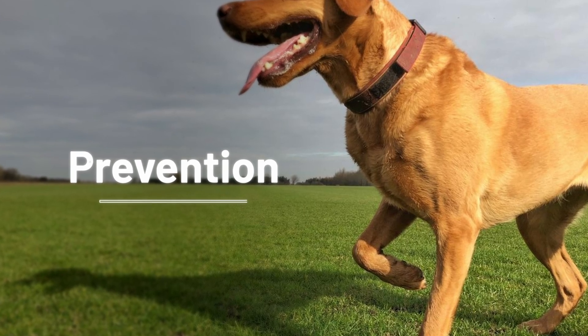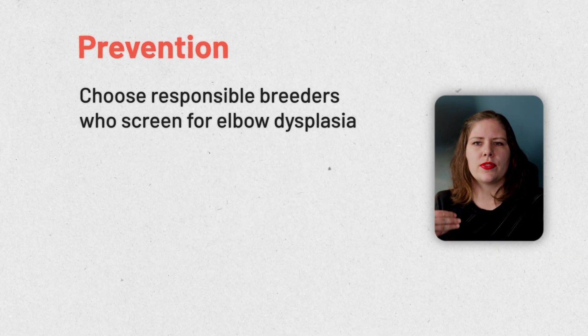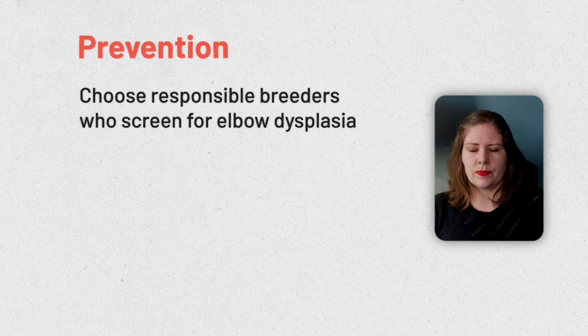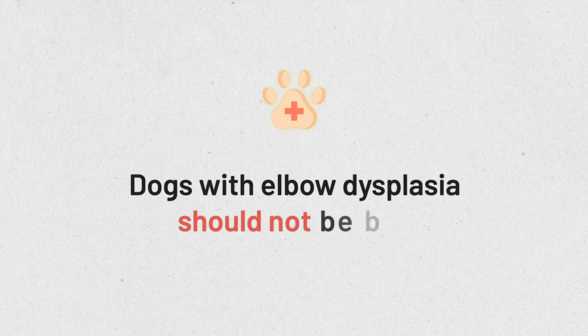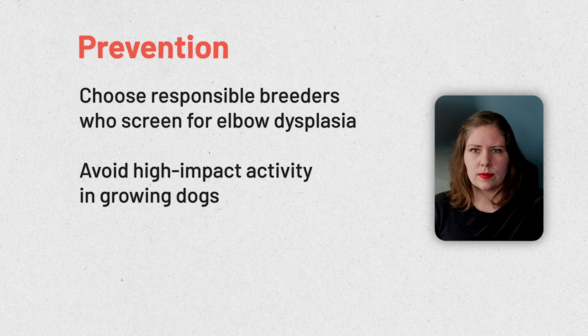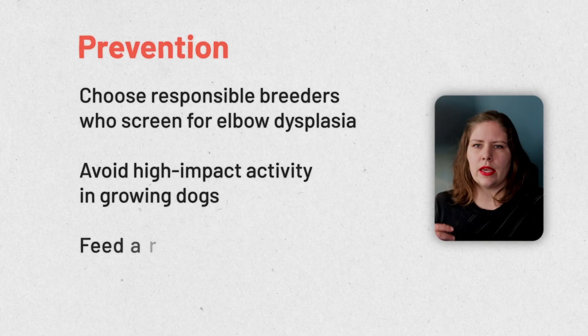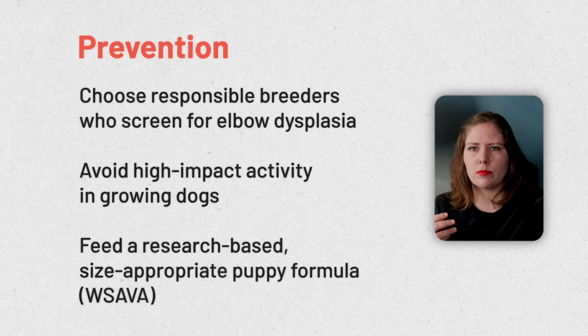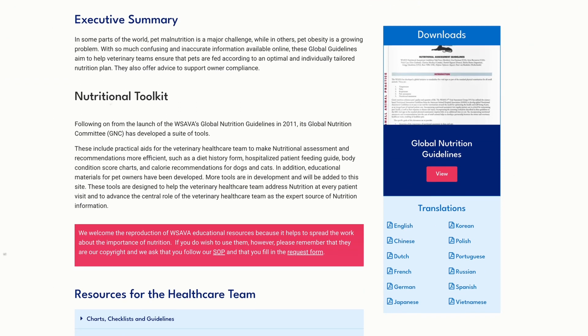Whenever possible, I prefer that we prevent problems rather than try to fix them once they've already happened. First and foremost, only work with breeders who are properly health screening the dogs they're using for breeding — both of my dog's parents were screened for elbow dysplasia and did not have any; if they did, they would not have been used for breeding. It's also important to avoid high-impact activities in growing dogs, and lastly it is key to feed a properly formulated, research-based, and size-appropriate puppy formula that meets WSAVA guidelines.